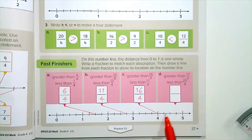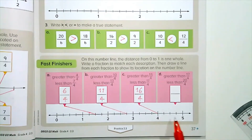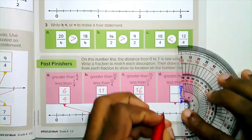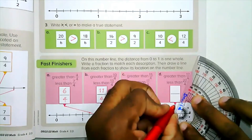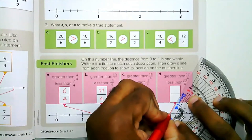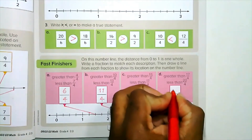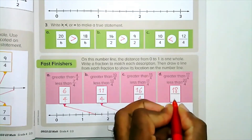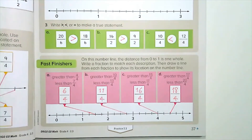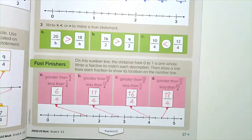Part d: greater than seventeen-fourths but less than twenty-fourths — so that will be eighteen-fourths. Now let's go on to the practice.